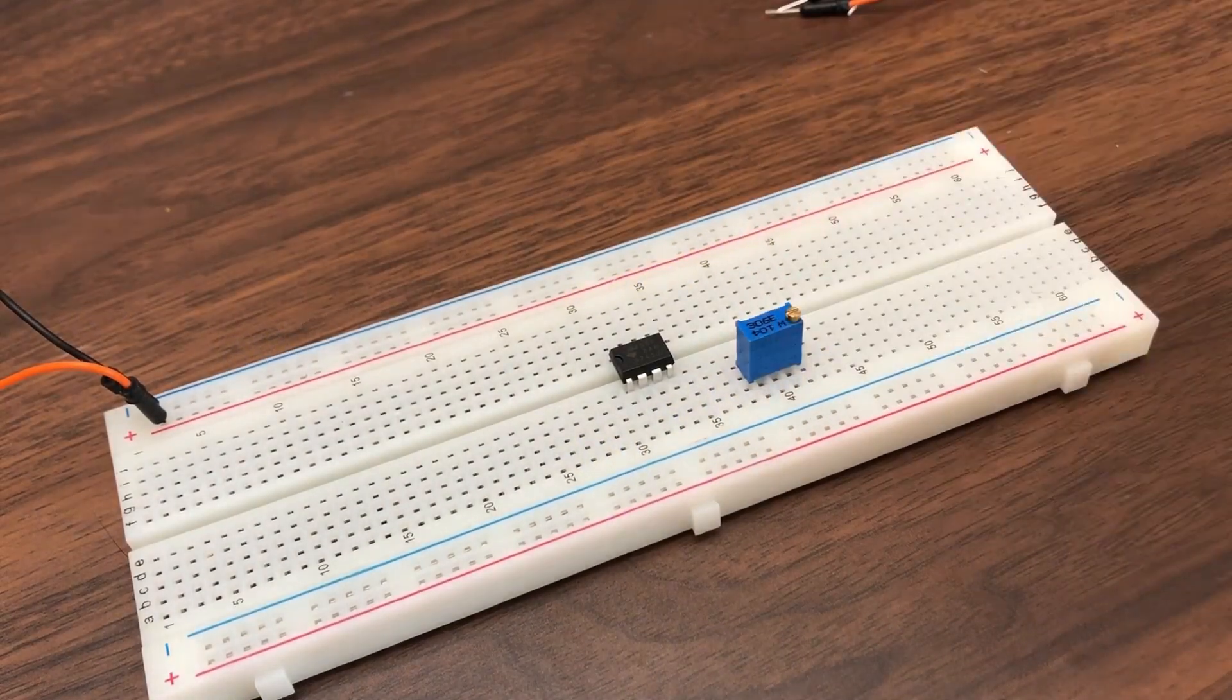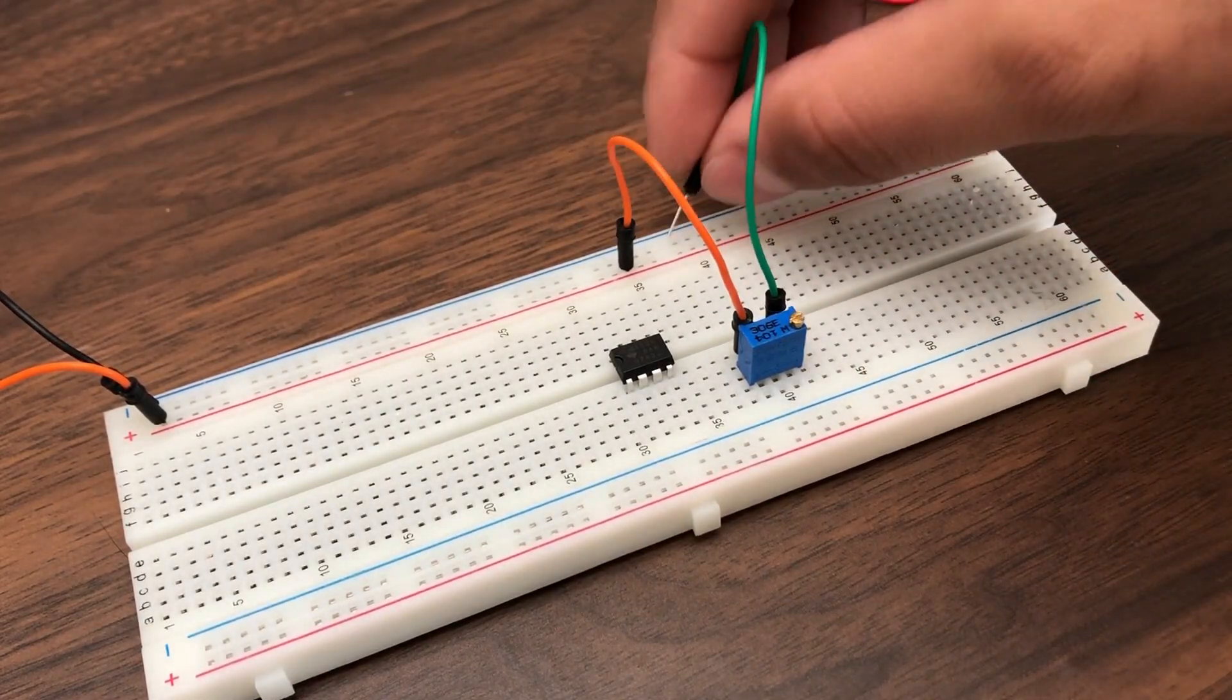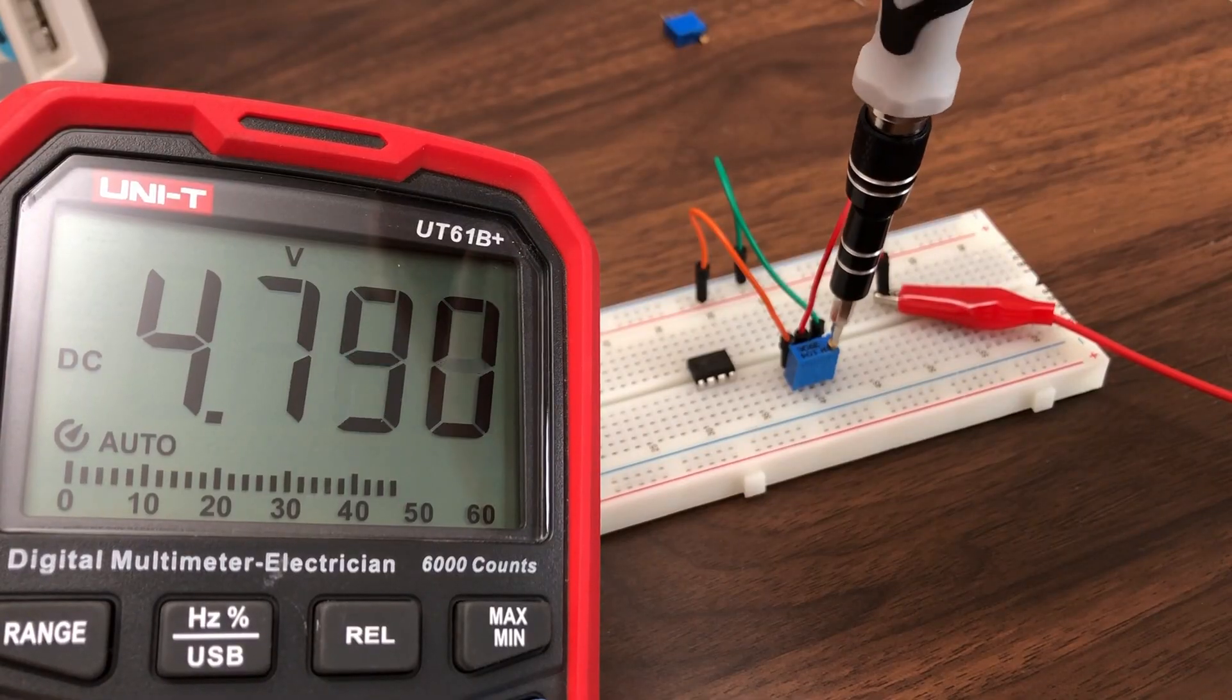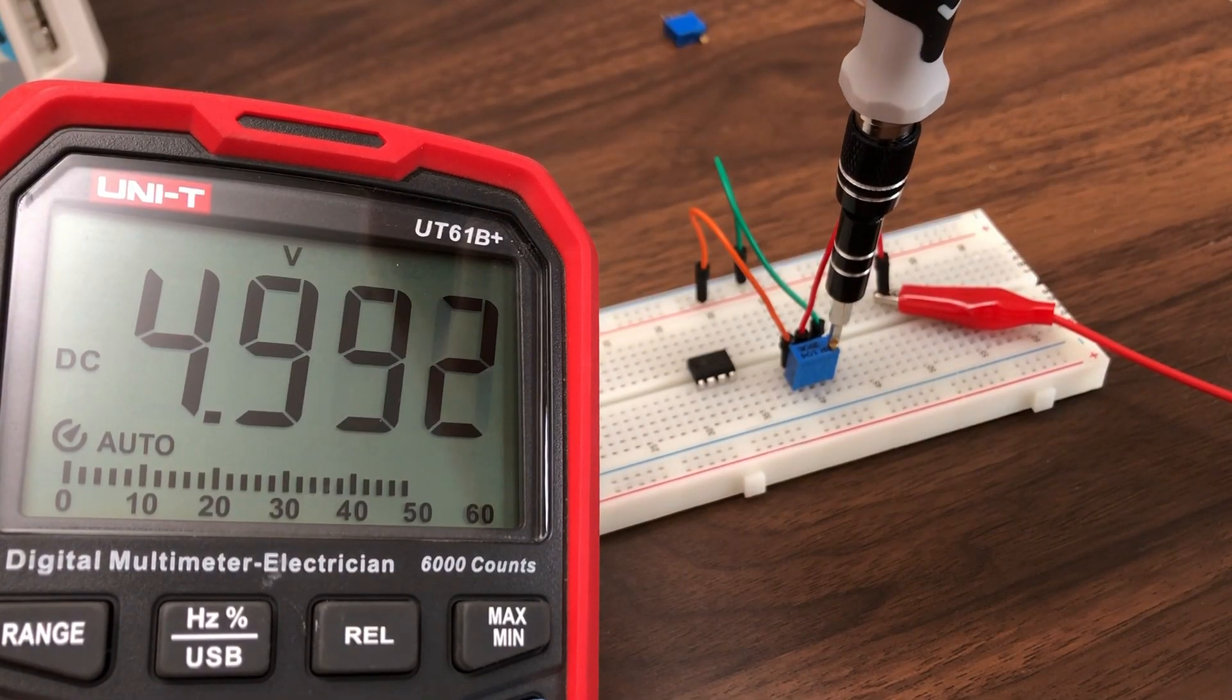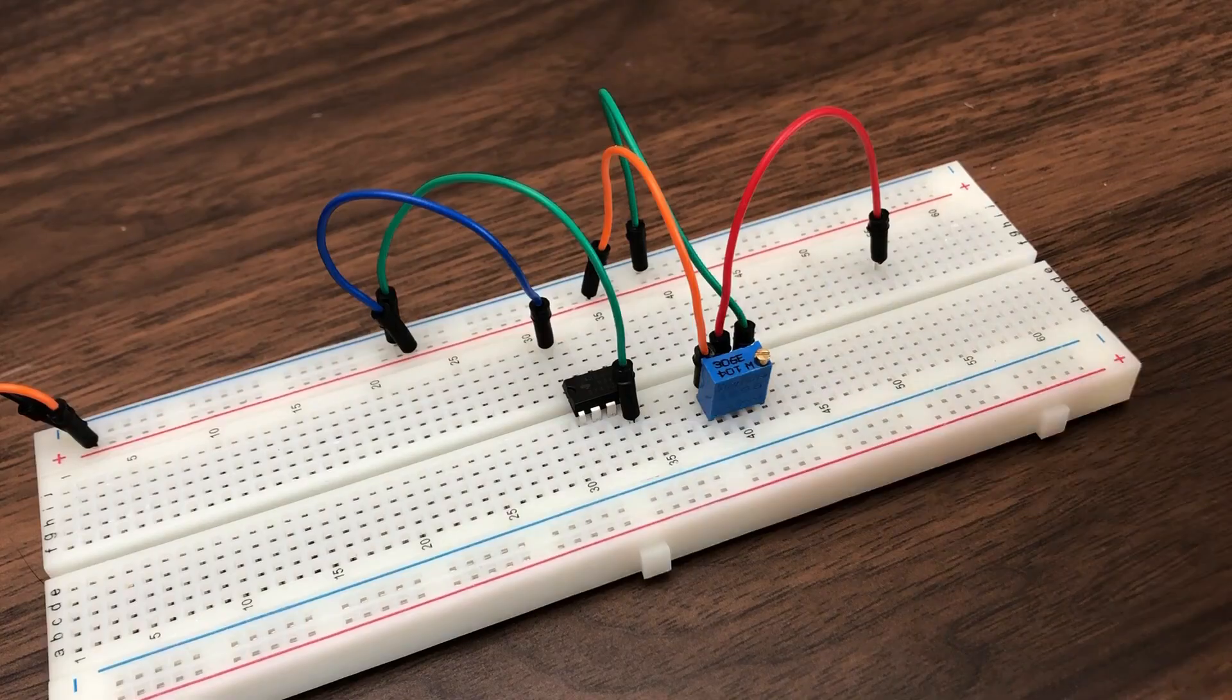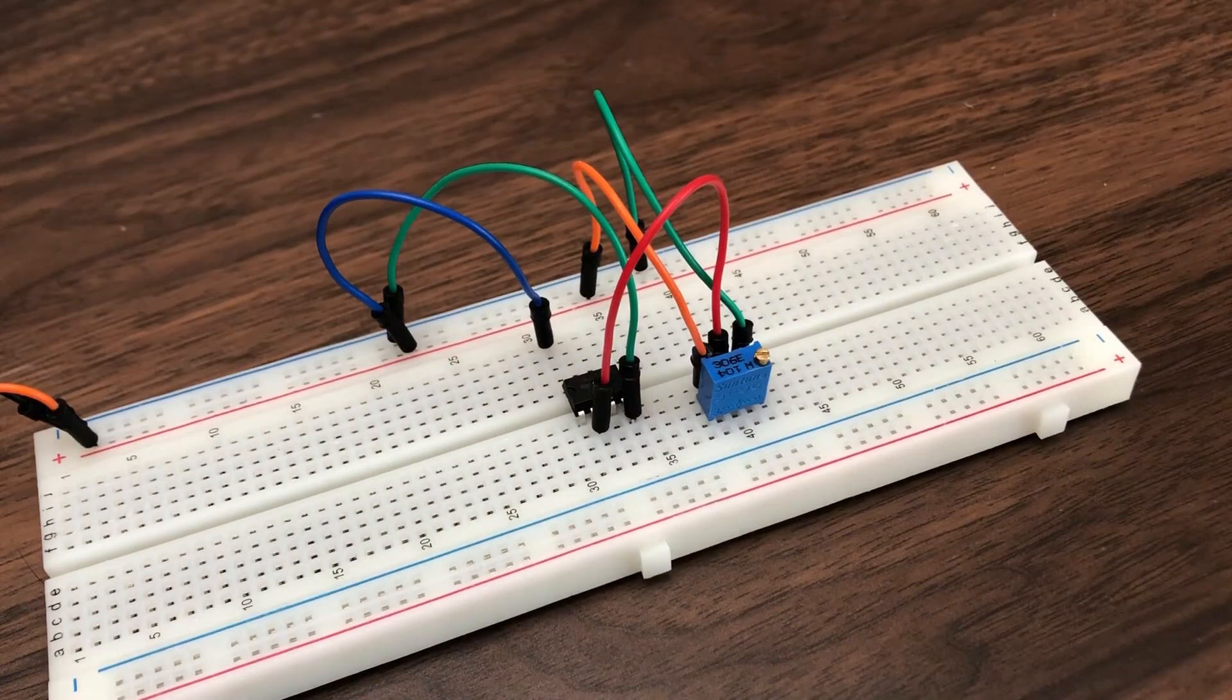To test this practically, let's build a circuit on a breadboard and see it in action. For creating the reference, I'm just using a potentiometer as a potential divider to get around 5 volts. This 5 volts is now our reference voltage, which will directly go to the inverting input of the op-amp.